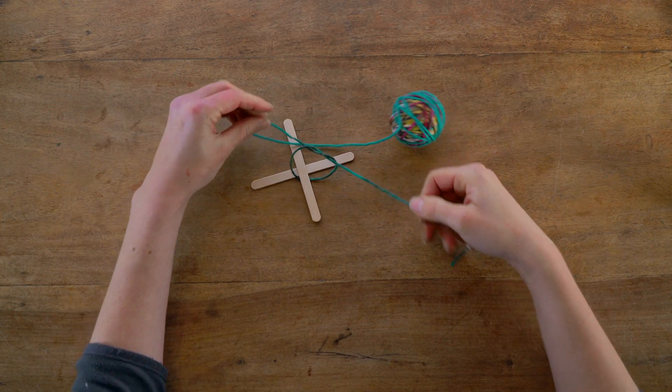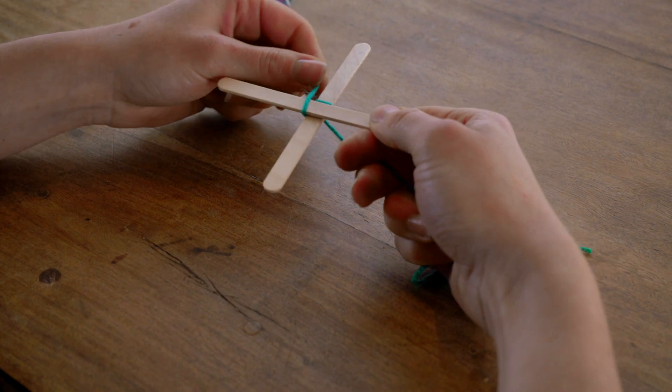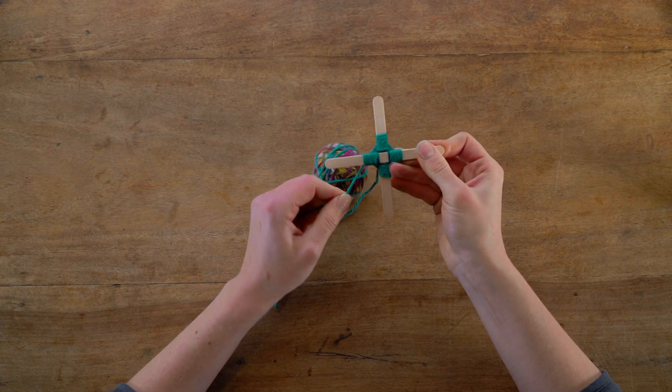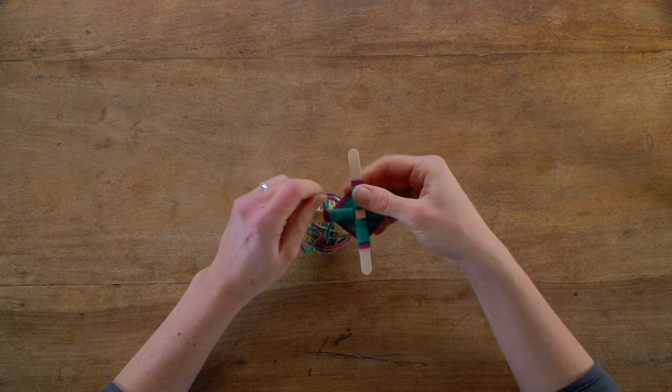Take some old wool and start to wind it around the four sections of your crisscross like this. We're going up and over. Look at the shape you're creating as you wind the wool around the sticks.